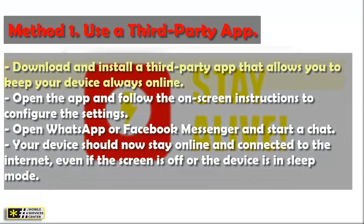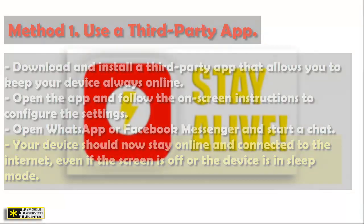Download and install a third-party app that allows you to keep your device always online. Open the app and follow the on-screen instructions to configure the settings. Open WhatsApp or Facebook Messenger and start a chat. Your device should now stay online and connected to the internet, even if the screen is off or the device is in sleep mode.